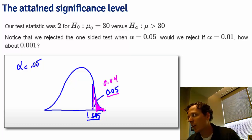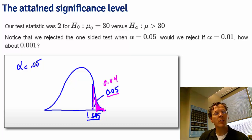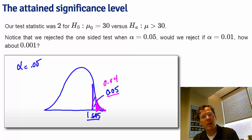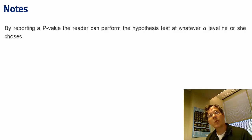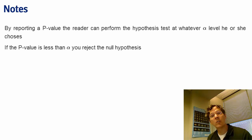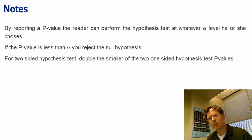What this means is that the p-value is an extremely convenient test statistic to communicate to people because when you give it to them, they can test it versus whatever alpha level they would like. Let's reiterate some of the points we made on the previous slide. By reporting a p-value, your reader or whoever you're giving the p-value to can perform the hypothesis test at whatever alpha level he or she chooses. The simple rule is, if the p-value is less than the alpha level, then you reject the null hypothesis. If the p-value is greater than it, then you fail to reject.